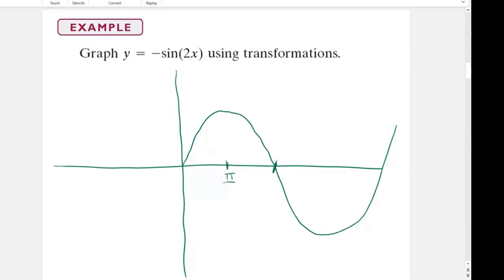This is pi over 2. This is pi. This is 3 pi over 2. And this is 2 pi. And this is 1. And this is minus 1.